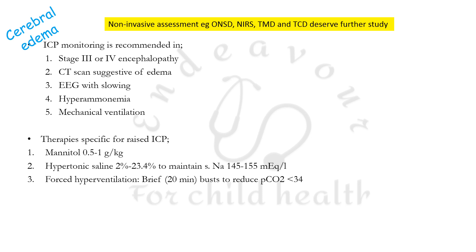Therapies for raised ICP include mannitol and hypertonic saline — specific percentages ranging from 2% to 23.4% are mentioned. The aim is to maintain serum sodium between 145 to 155 mEq per litre. Forced hyperventilation by brief 20-minute bursts to reduce pCO2 to less than 34 mmHg is recommended, since extended hypocapnia may place the patient at risk for hypoxia.